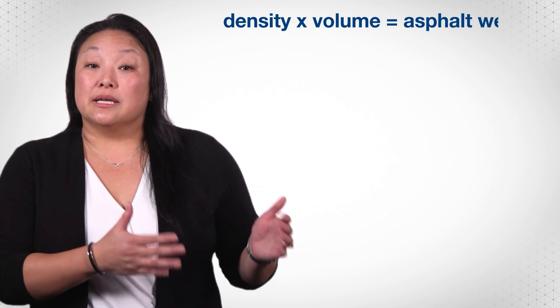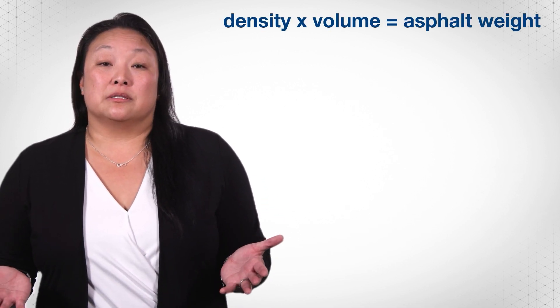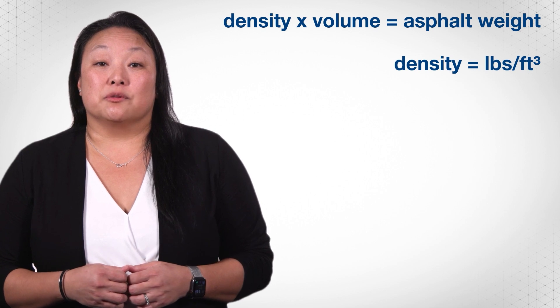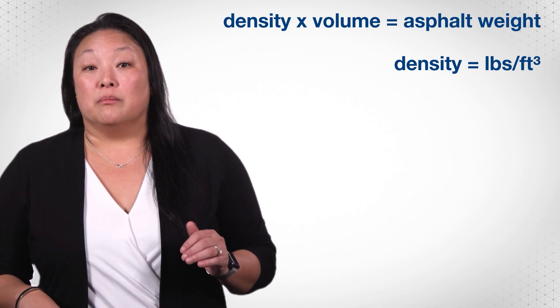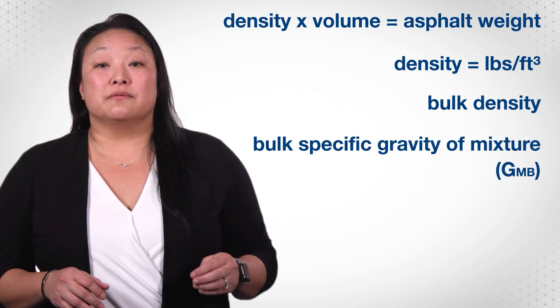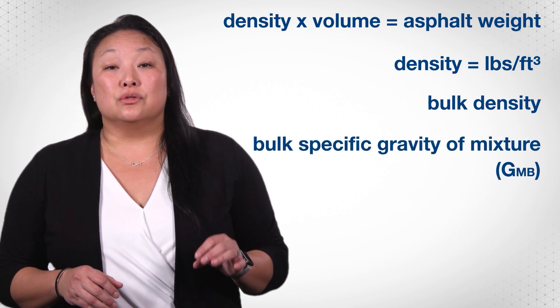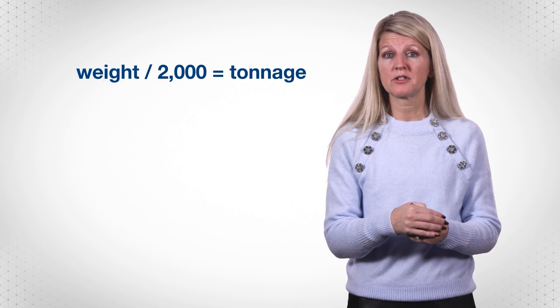Next, use the density provided by the supplier as part of the mix design. Multiply the density by the volume to get the weight of the asphalt mix to be placed. The density is reported in pounds per cubic foot, and may be called bulk density or bulk specific gravity of the mixture — GMB. Divide the weight by 2,000 to get the tonnage for the job.